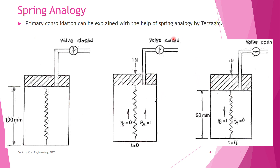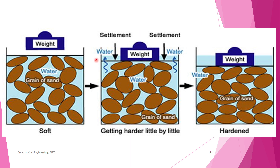This is the concept of consolidation, explained using the spring analogy. In terms of soil: load is applied, water is slowly expelled out, and finally there is a reduction in volume. Looking at the void ratio — in the initial case there are many voids, but after consolidation the voids are reduced and the void ratio decreases. As effective stress is improved, the strength of the soil is also improved.